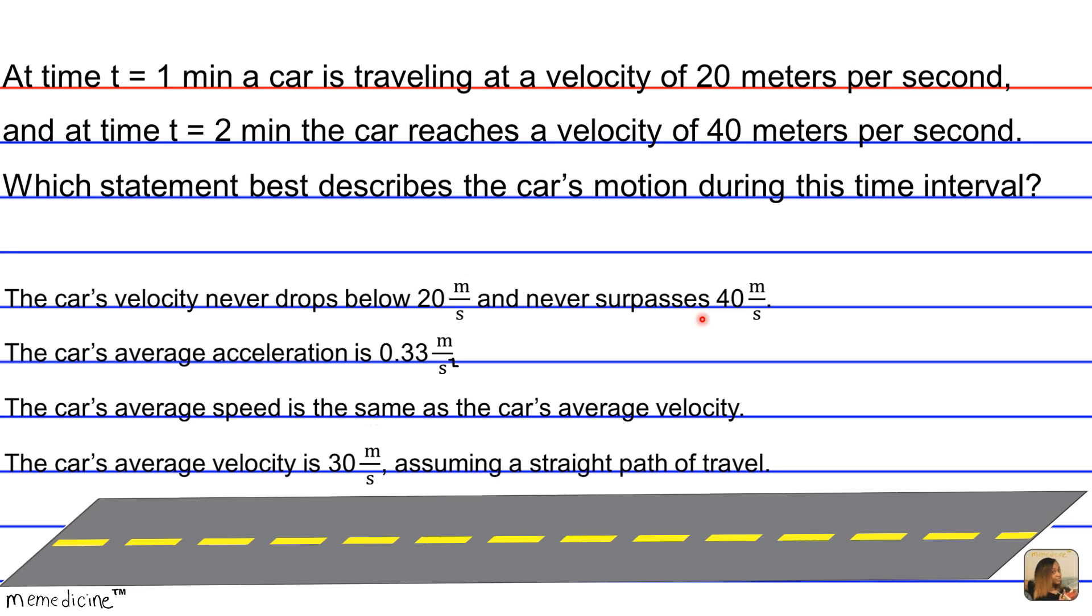In the same interval, the velocity could have assumed any value, positive or negative, so we can't make any assumptions about what's going on in between this interval. But that would leave answer choice B, and that's going to be our answer.